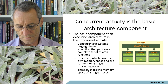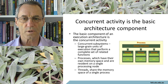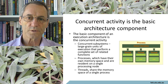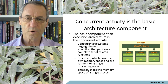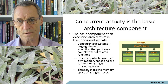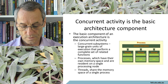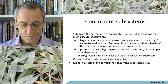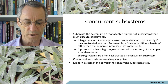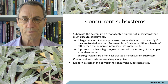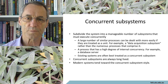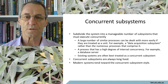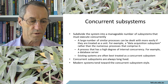The basic components are: concurrent subsystems, which are large-grain units of execution that perform a set of related functions; components or processes, which have their own memory space and are resident usually in a single node. There are threads which share the memory space of a single process. Concurrent subsystems subdivide the system into a manageable number of subsystems that execute concurrently. Usually you'll find these concurrent subsystems placed on separate servers, though this is not necessarily so — they execute quite independently and concurrently.